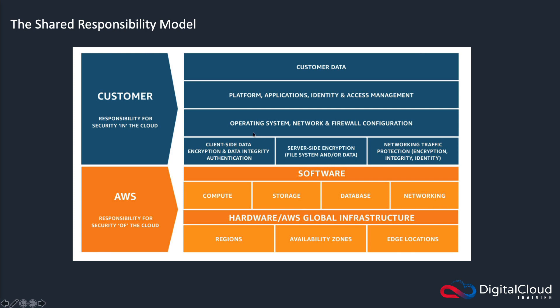Operating systems are a customer responsibility. If you're running EC2 with Linux or Windows, you need to manage that operating system yourself. Networking and firewall configuration — if you're running a firewall on your EC2 system or using security groups and access control lists — is a customer responsibility. Moving up another layer, we have the platform, applications, and identity and access management, including applications you install, and authentication and authorization systems — users, groups, roles, and policies — all customer responsibilities.